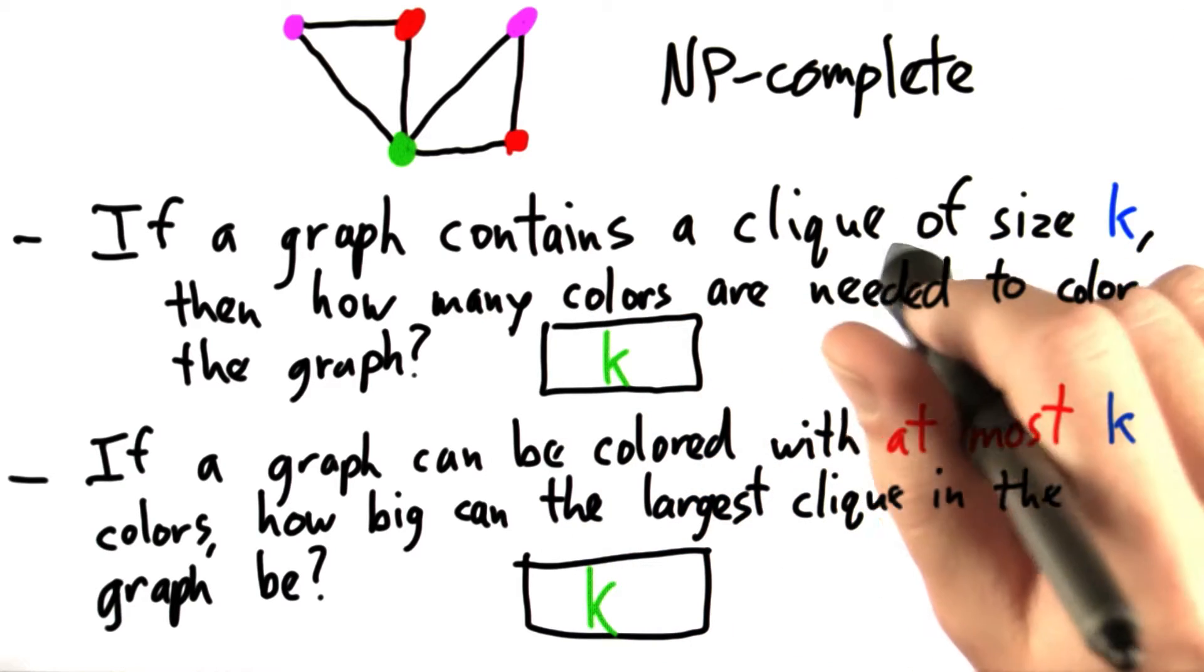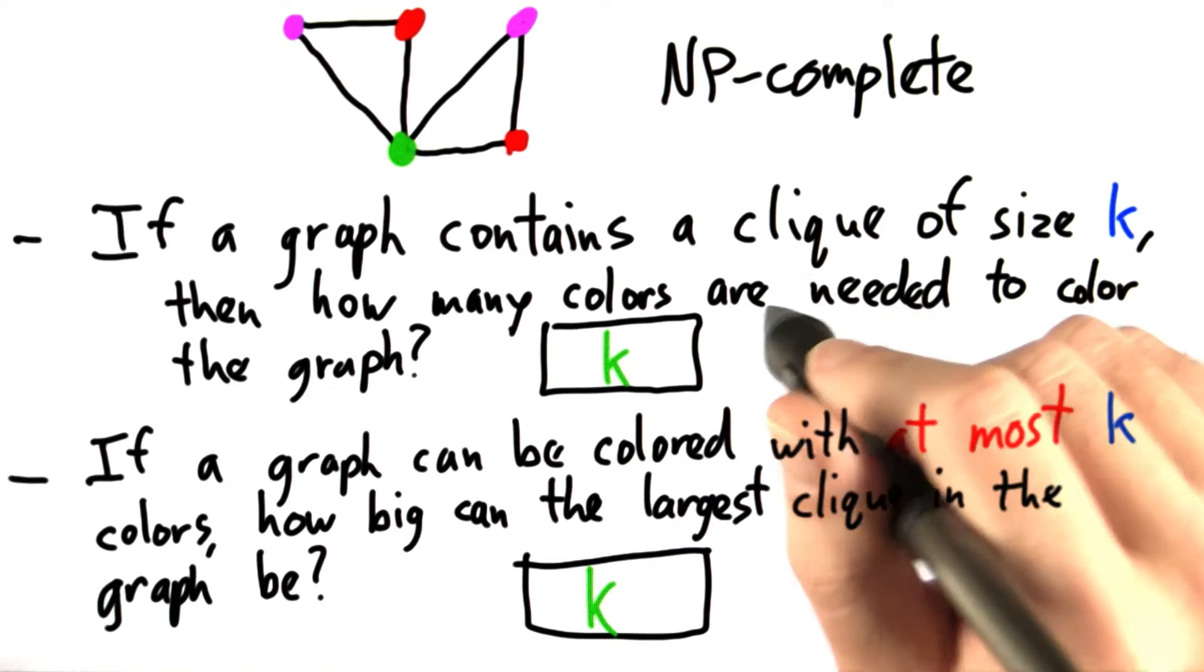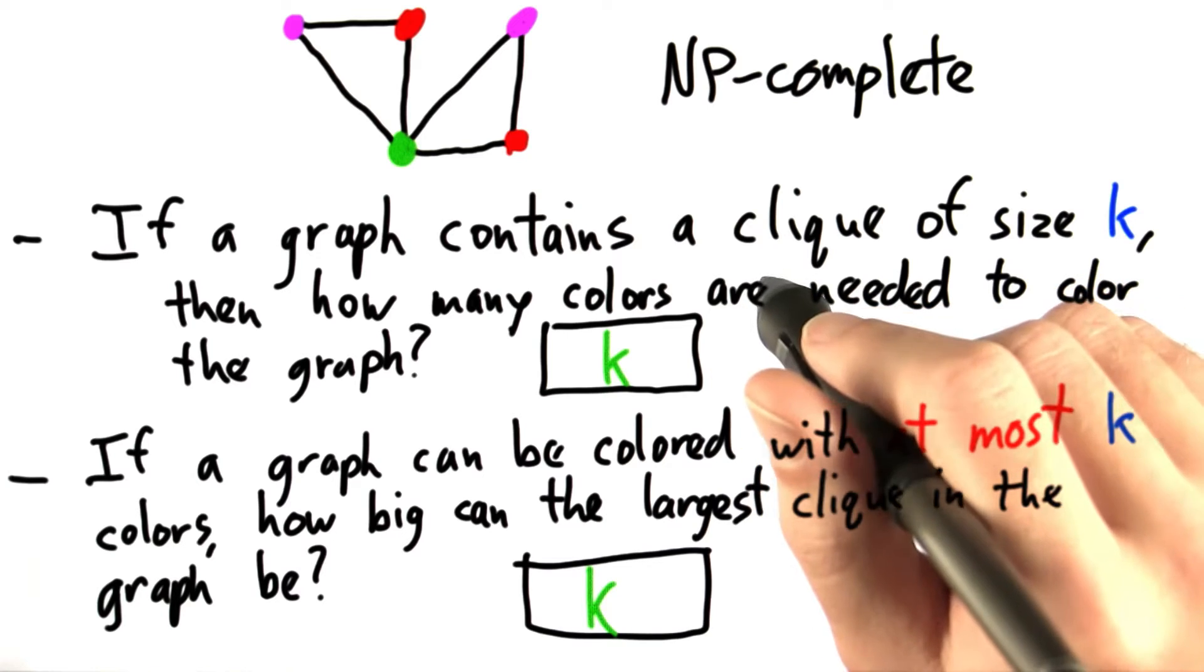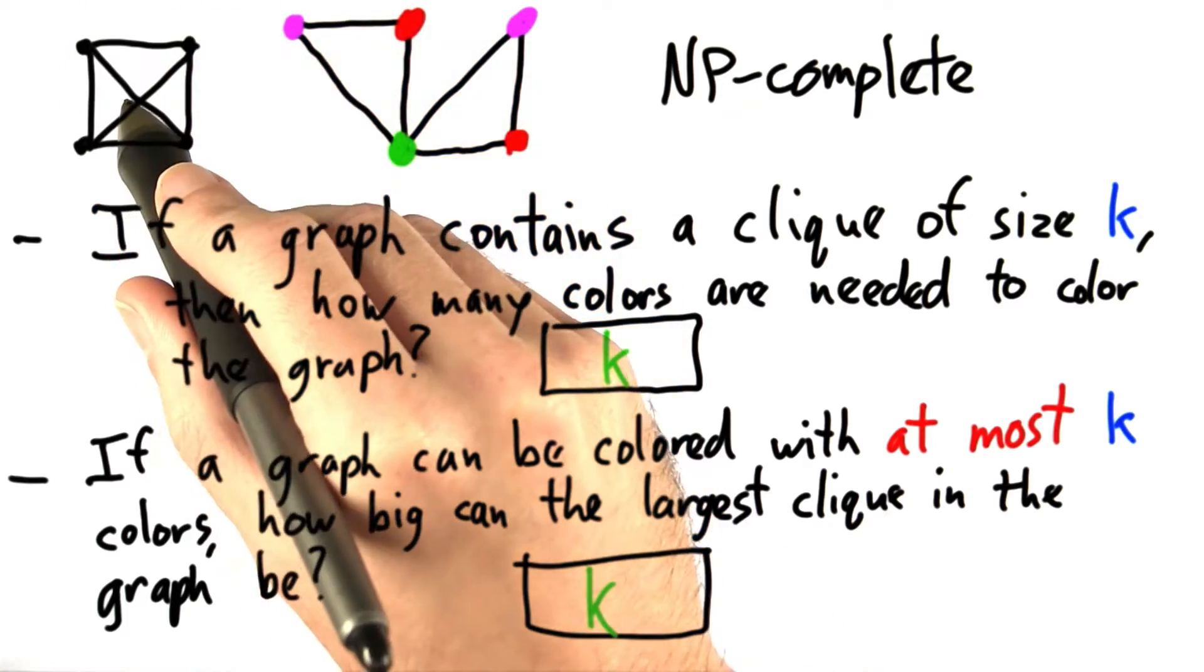Now, remember, a clique is a subgraph in which all the vertices in the subgraph are connected to all the other vertices in the subgraph, like, for example, this subgraph.